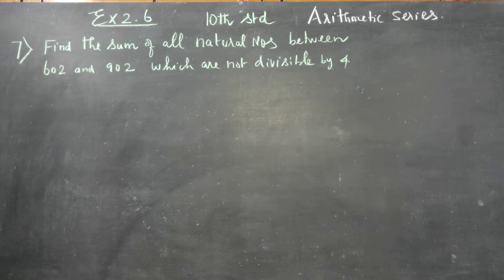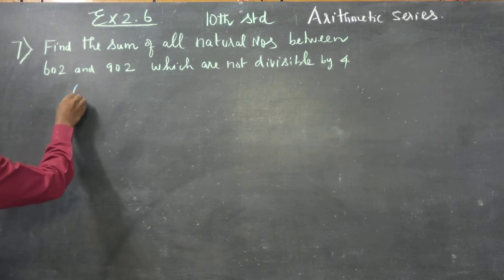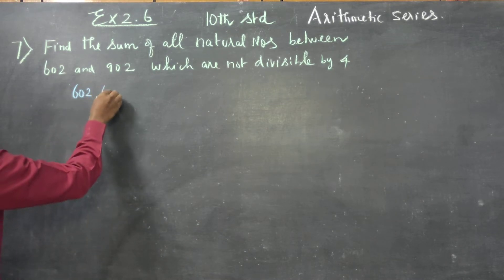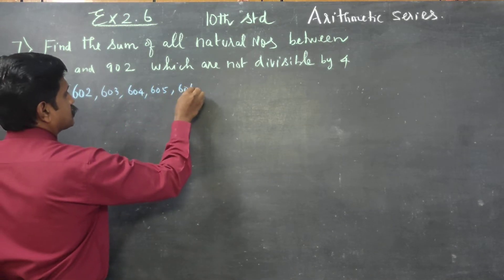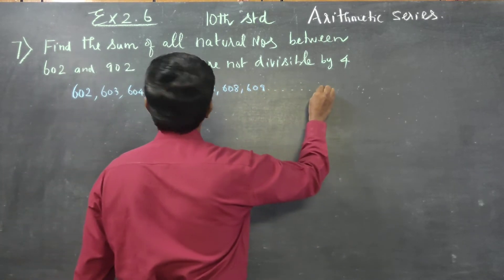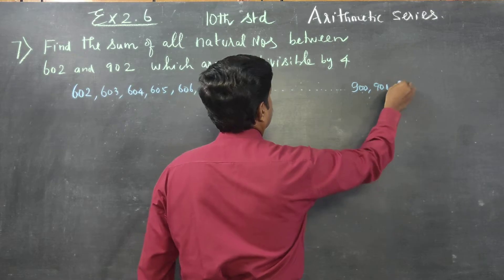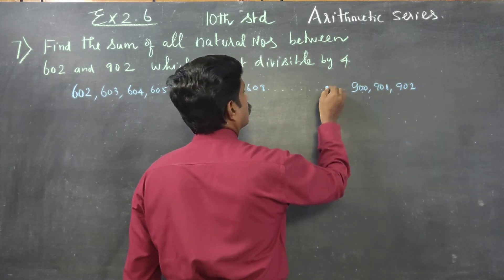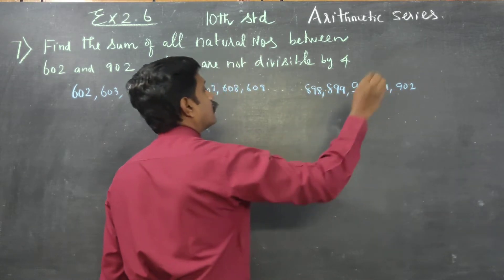I want the sum of all the numbers between 602 and 902 — that is 603, 604, 605, 606, 607, 608, 609, dot dot dot, 898, 899, 900, 901, 902.